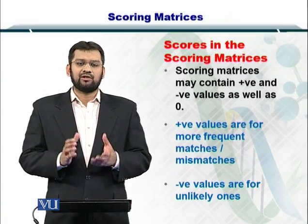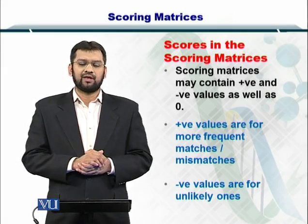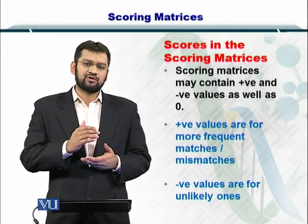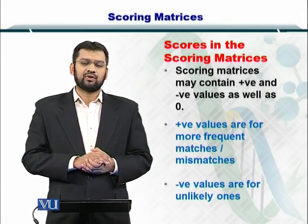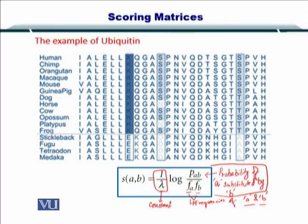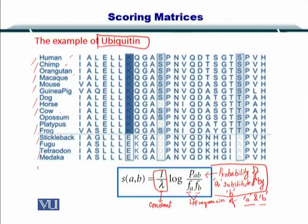The scoring matrix, by looking at such frequencies, may contain a positive number indicating a very easy transition or substitution from one amino acid to another. Here is an example in which we have taken a protein called ubiquitin and listed several of these ubiquitins from humans, chimps, orangutans, and so on. Their sequences have been aligned with each other. As you can see, some amino acids are rarely substituted, some are completely conserved, while others are changed or substituted.